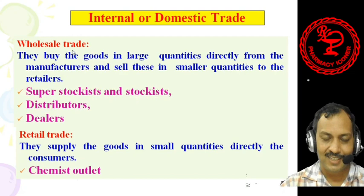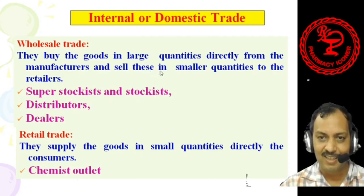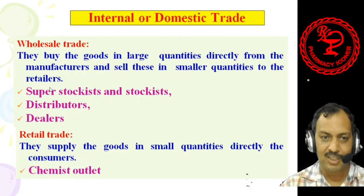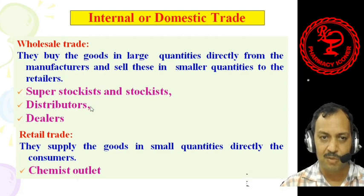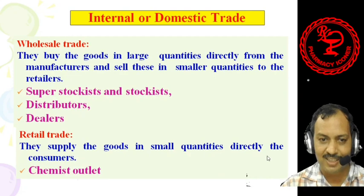In wholesale trade, traders buy goods in large quantities directly from the manufacturer and sell them in smaller quantities to retailers. Examples of wholesale trading include super stockist, stockist, distributors, dealers, etc. In contrast, retail trade supplies goods in small quantities directly to the consumer — for example, chemist outlets, retail drugstores, etc.